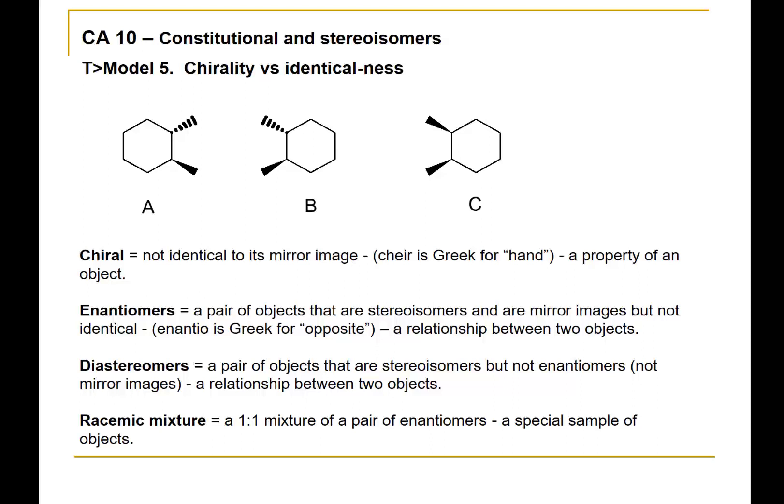Enantiomers, as we've mentioned before, are stereoisomers that are non-identical or non-superposable mirror images. When we say enantiomers, this always implies a relationship between two objects. Diastereomers refer to a pair of stereoisomers that are not enantiomers. Diastereomers can occur in a range of ways, whereas enantiomers are quite specific — they have to be mirror images that are not identical.